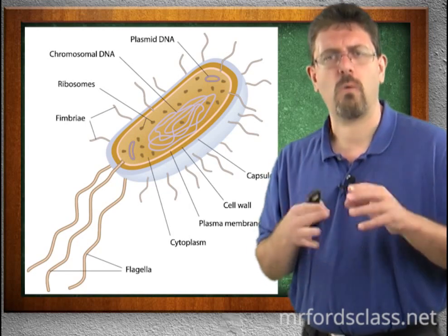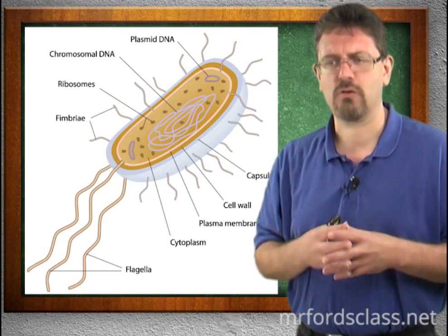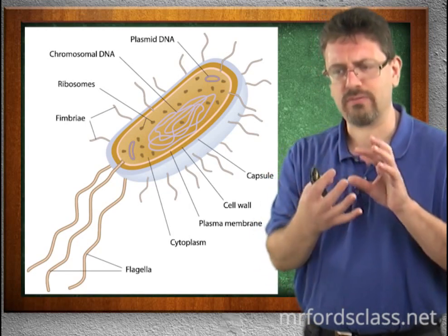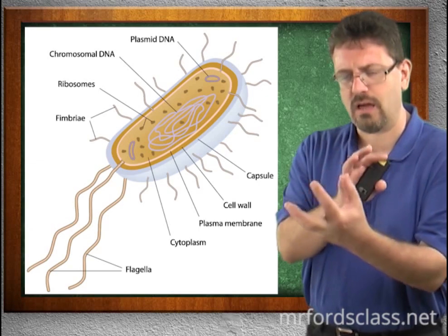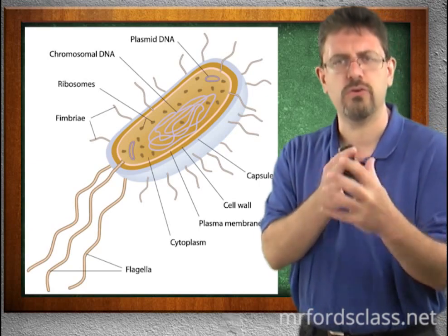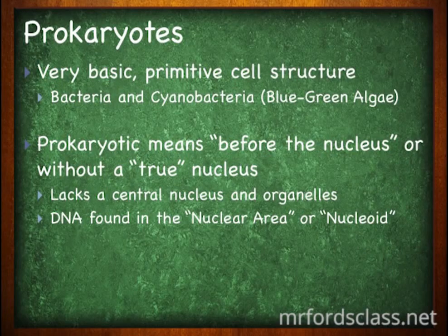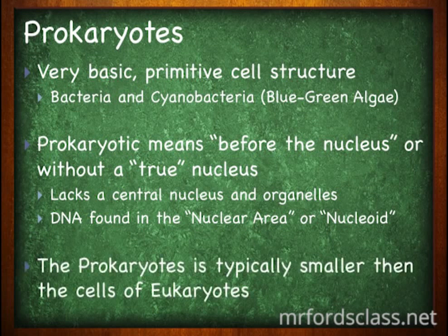What we have instead is a grouping of the DNA called a nuclear area or a nucleoid, but it's not a self-contained nucleus like we're going to find in the eukaryotes. Prokaryotes are typically smaller than eukaryotes.